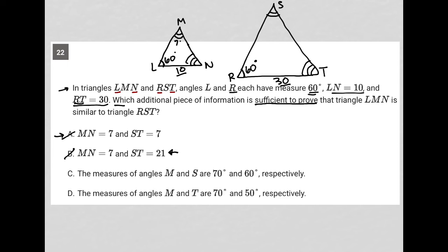So if M was 70 and S were 60, that would actually disprove, right? Because in order to be similar triangles, the corresponding angles have to be congruent. So C is also gone, which means D better be the correct answer. But we have to test it out.